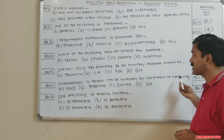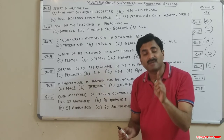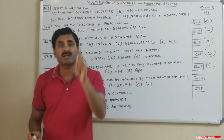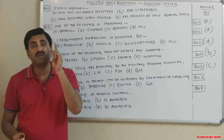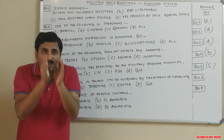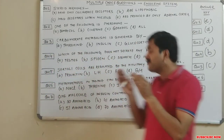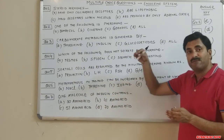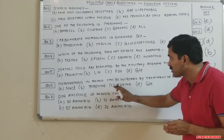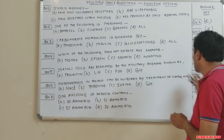Question six: metamorphosis in tadpoles can be increased by treating water with which substance? The tadpole is the larva of the frog. If there is a deficiency of iodine in the water, the tadpole cannot metamorphose into an adult frog. To induce metamorphosis, the water must be treated with iodine. The answer for question six is C: iodine.